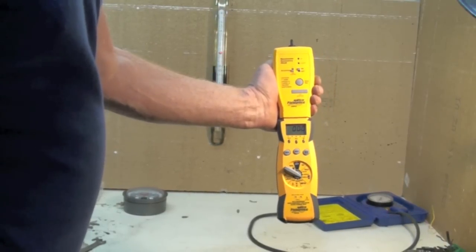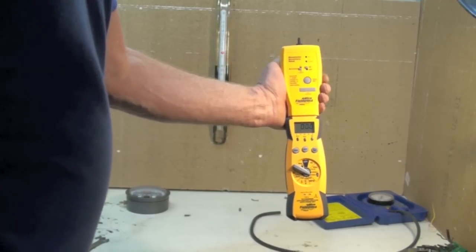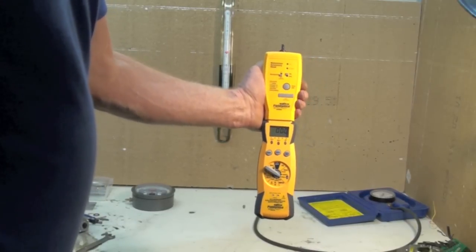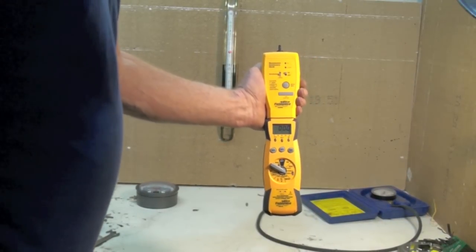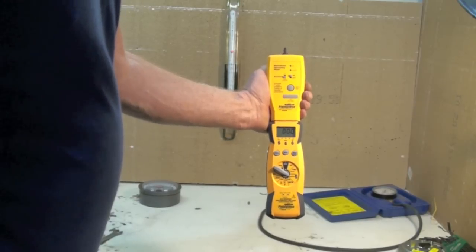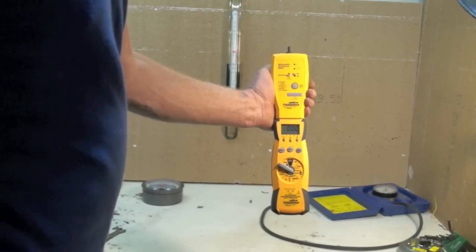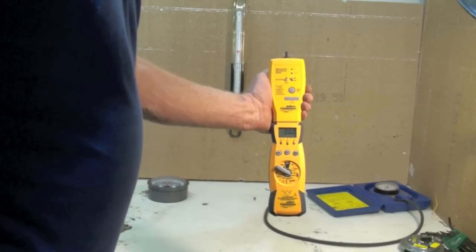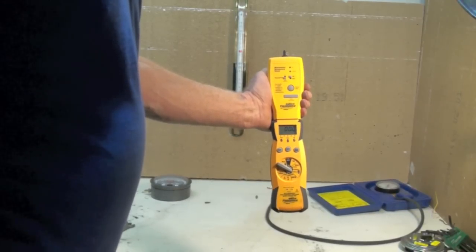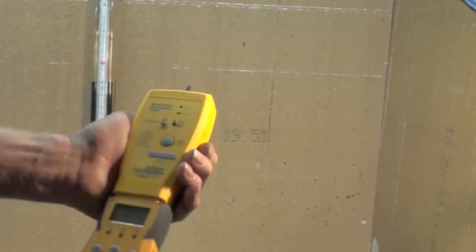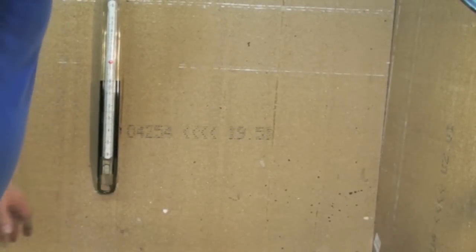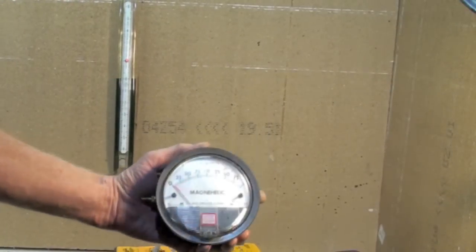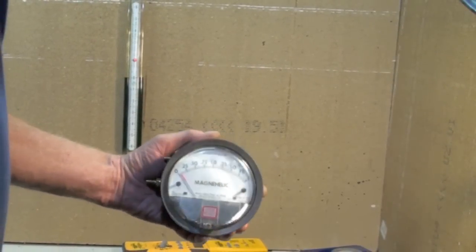These are probably the most accurate although occasionally they do need to be recalibrated. This one here would be my choice. This one will read very high pressures, very low pressures in water column, and it will take the place of several of these MagnaHelix because I'd have to have one of these for each range.